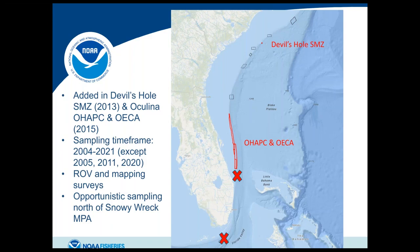We added sampling at the Devil's Hole Spawning Special Management Zone in 2013, which was designated as a spawning SMZ in 2016. We also added sampling of the Oculina HAPC and OECA in 2015 at the council's request. Even though the MPAs weren't implemented until 2009, we began surveying in 2004 and have done annual sampling through 2021, with the exception of 2005, 2011, and 2020. Our sampling approach included ROV dives and multi-beam mapping surveys.